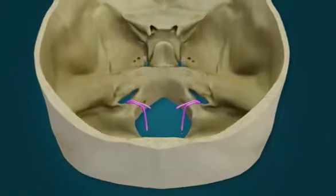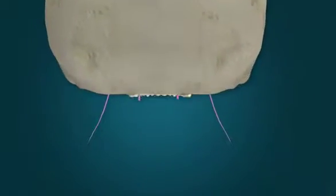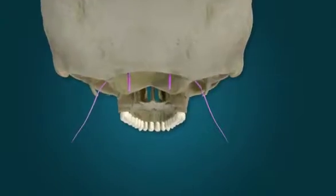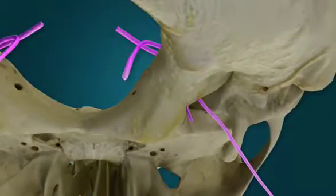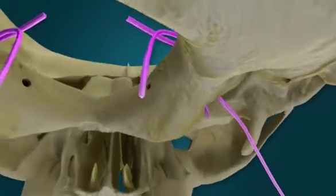The spinal accessory nerve contains somatic motor fibers that innervate the sternocleidomastoid and trapezius muscles. These fibers originate from cervical nerve roots C1 to C5.